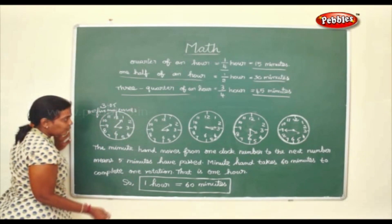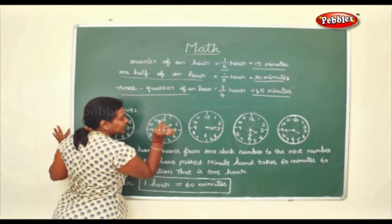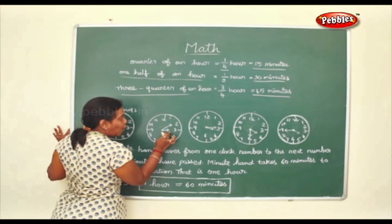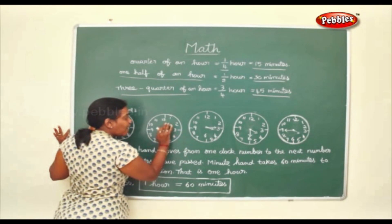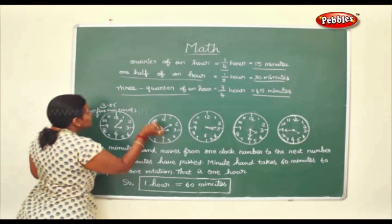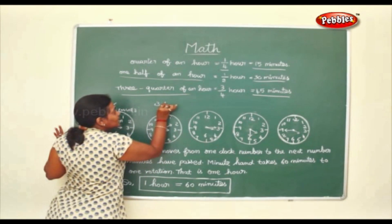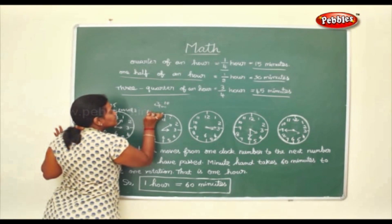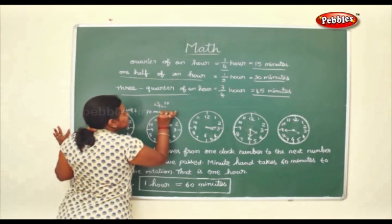Five minutes past three. In the same way, here the long hand is at two, which means ten minutes. So this is three ten, or ten minutes past three.